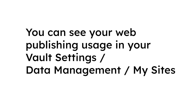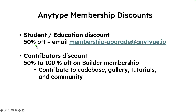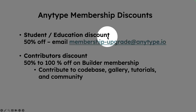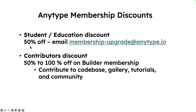There are also other ways to get discounts. AnyType has a student education discount where you can get 50% off a membership. You just have to email membership upgrade at anytype.io — you can find that information in the AnyType documents, which I'll link down below.